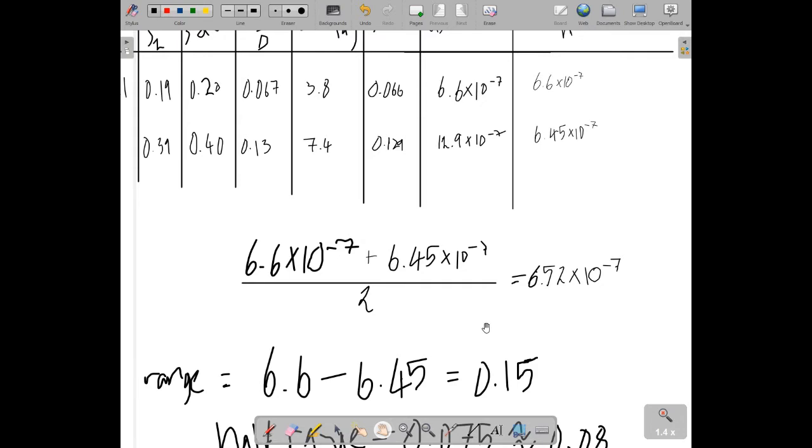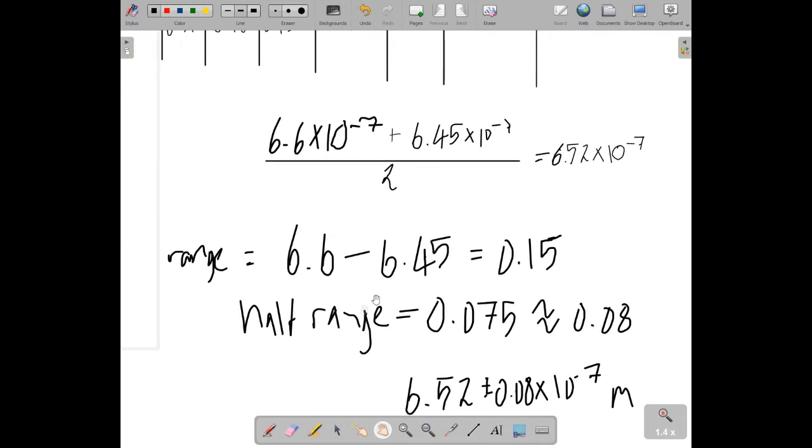Remember, this is a slightly made-up value. My range is going to give me some estimate for my uncertainty in the result. I'm going to use half range as my uncertainty, because in theory half range would take me to above or below my original. So I subtract the two numbers from each other, and I get 0.15 times 10 to the minus 7.